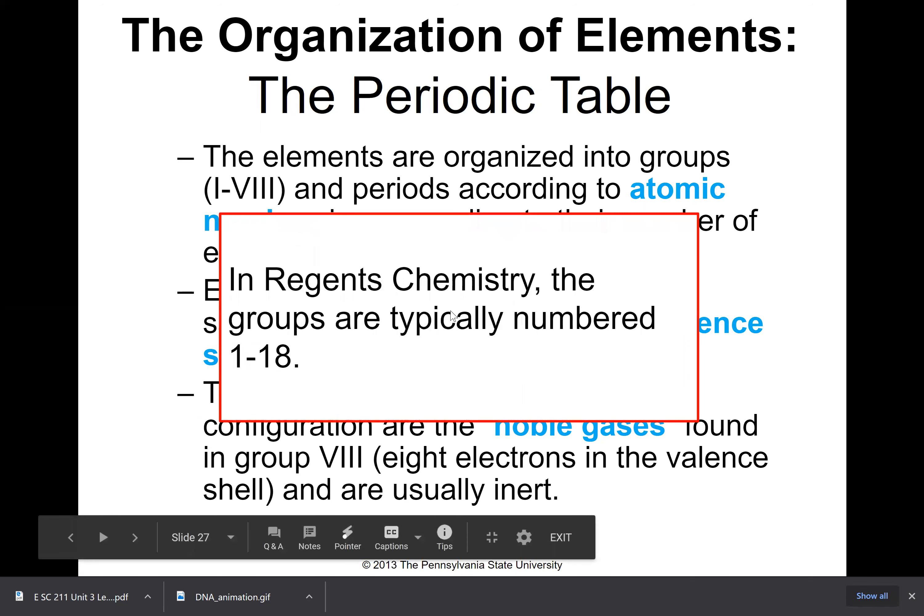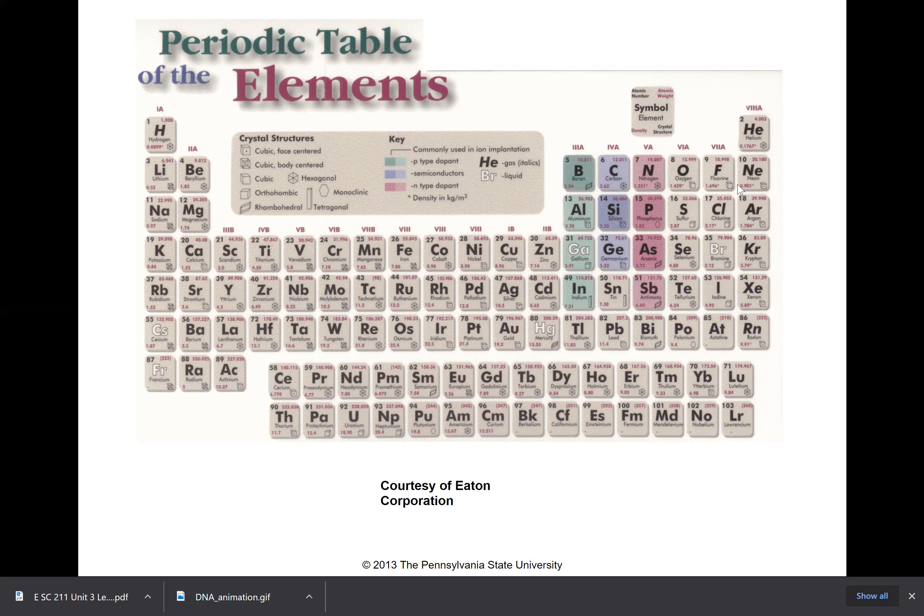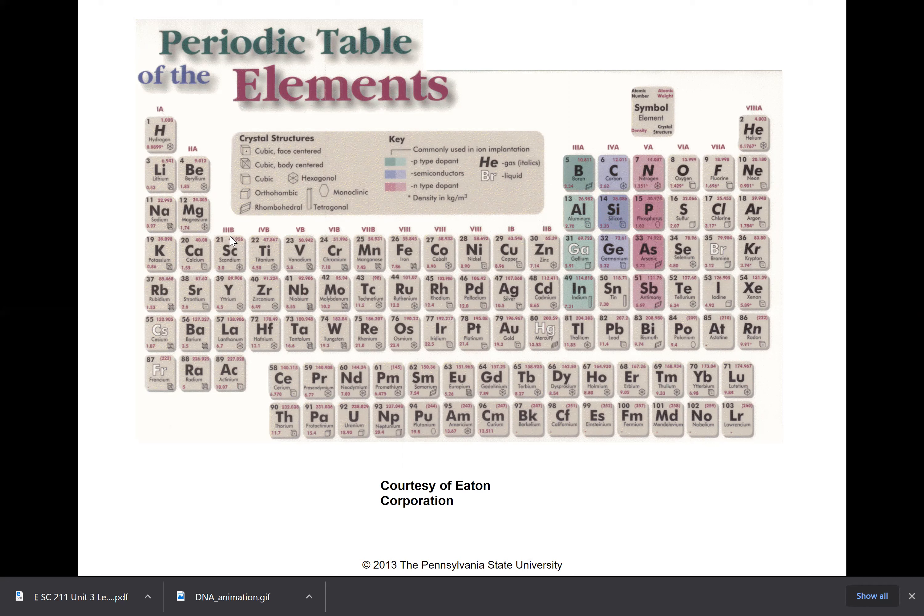I made this to remind you—in regions chemistry the groups are typically numbered one through eighteen rather than Roman numerals one through eight. If you look carefully, this is the older way to number the groups on the periodic table or columns. They have 1A, 2A, 3, 4, 5, 6, 7, and 8A. If you looked at the electron configuration, the valence electrons are all one for this group, two for this group, three, four, five, six, seven, and eight for that—the valence electrons.